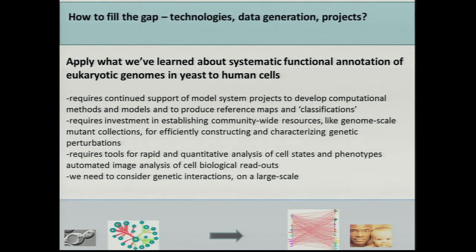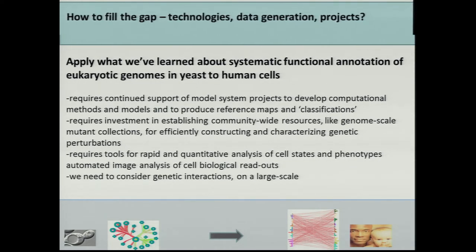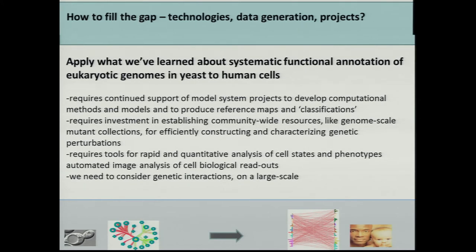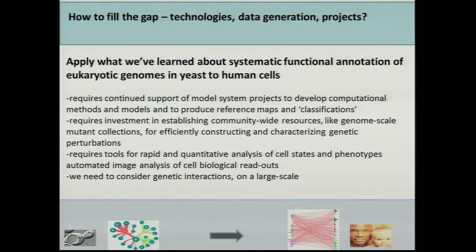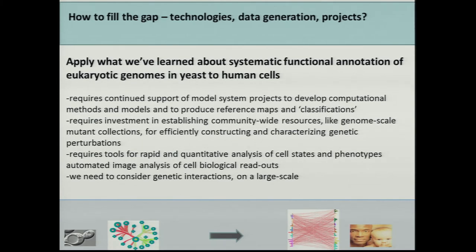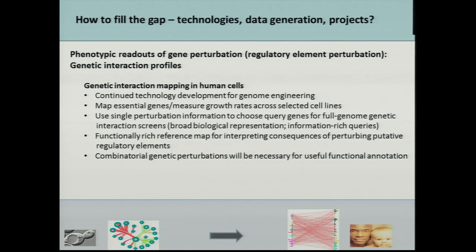This requires continued support of model system projects because we can generate lots of good data to help develop computational methods and models to infer gene function. It requires investment in establishing community-wide resources — the yeast community has done this well with arrays of strains for systematic perturbation of gene function. As people have been saying, this means genome-scale mutant collections or CRISPR-based collections. We need tools for rapid and quantitative analysis of cell states and phenotypes, and we need to consider genetic interactions on a large scale in mammalian cells.